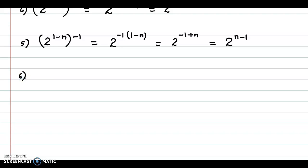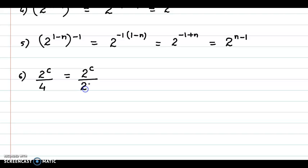Let's take the next example: 2 raised to c upon 4. We can express 4 as 2 squared. Using the law of exponents, we have 2 raised to c minus 2. The law is: a raised to m upon a raised to n equals a raised to m minus n.